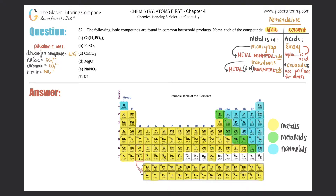Problem 32: the following ionic compounds are found in common household products — name each compound, a through f. Since they're all ionic compounds, we basically just have to figure out whether the metal is a main group metal or a transition metal, because ionic compounds the majority of the time are always a metal plus a non-metal or a metal plus a polyatomic ion.